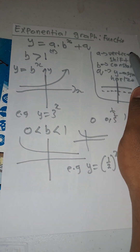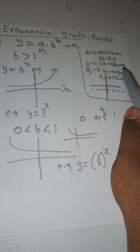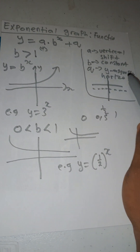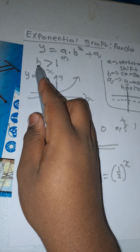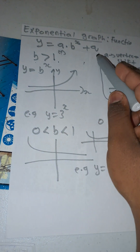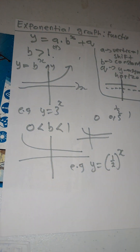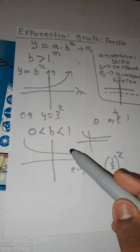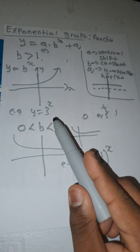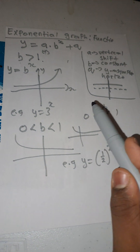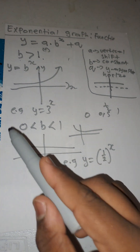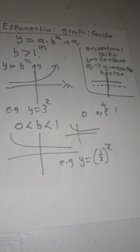To summarize: a is the vertical shift, b is a constant, and q is the y-asymptote that cuts the y-axis horizontally. When b is greater than one, the graph is an increasing function. When b is between zero and one — for example y = (1/2)^x — the graph is a decreasing function.